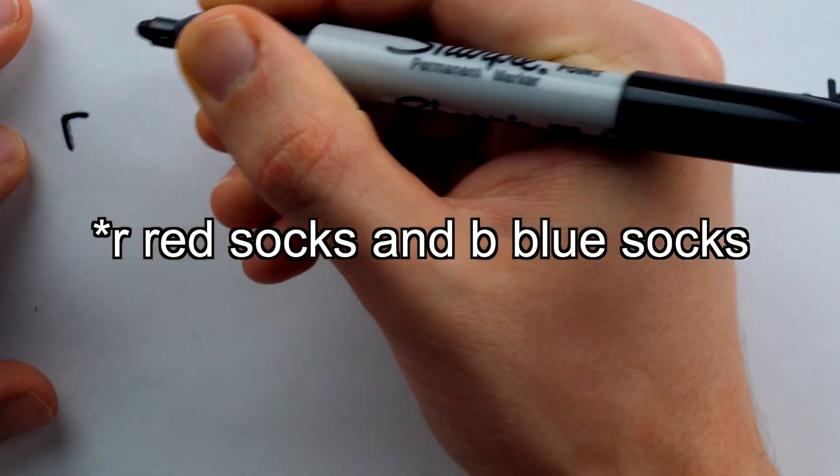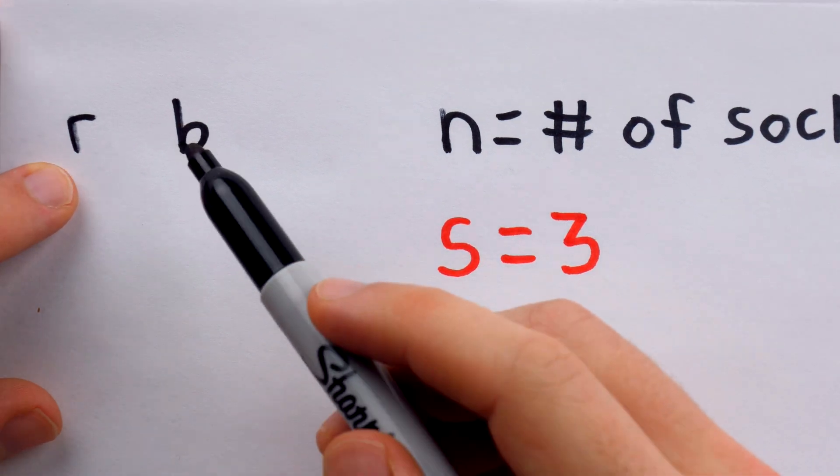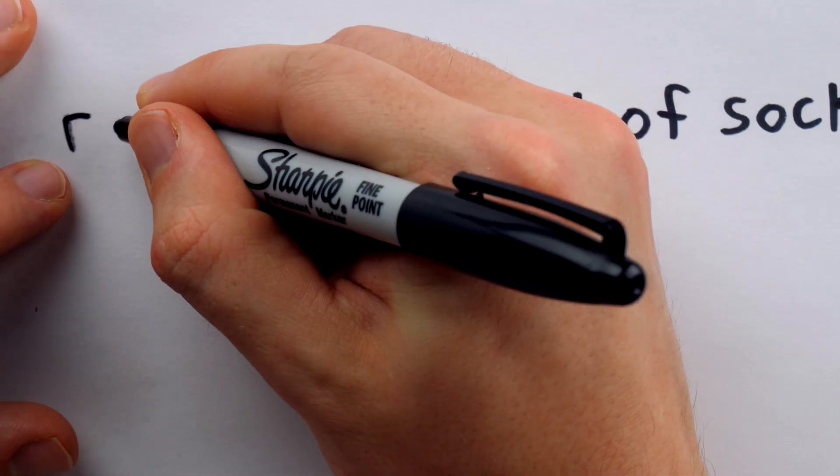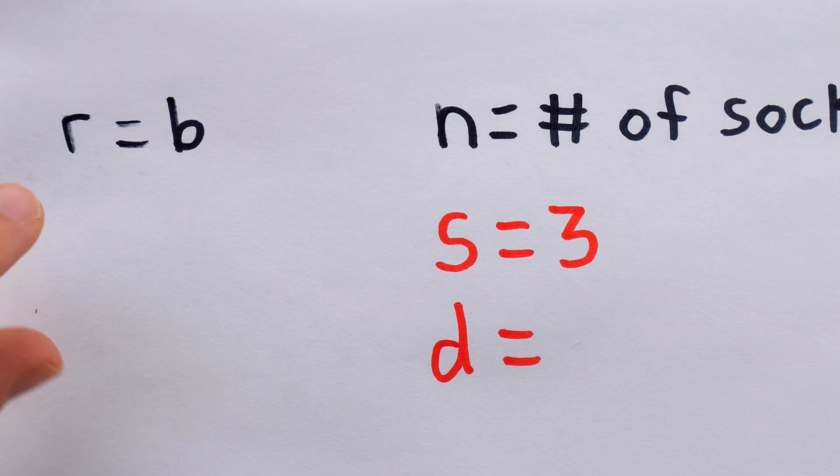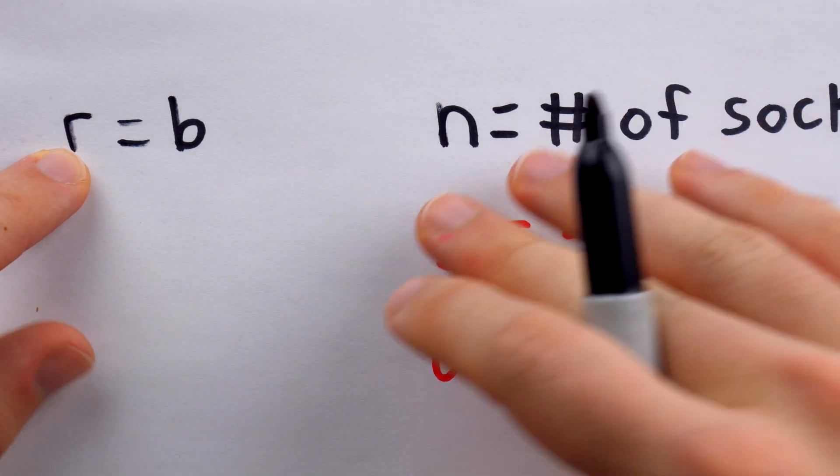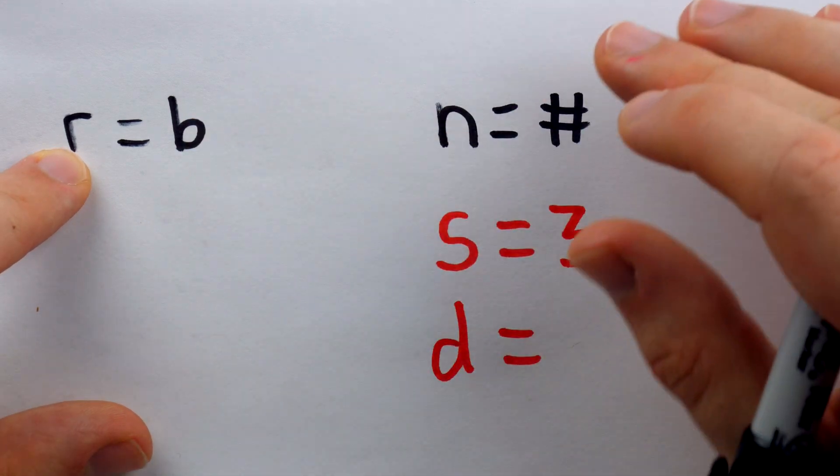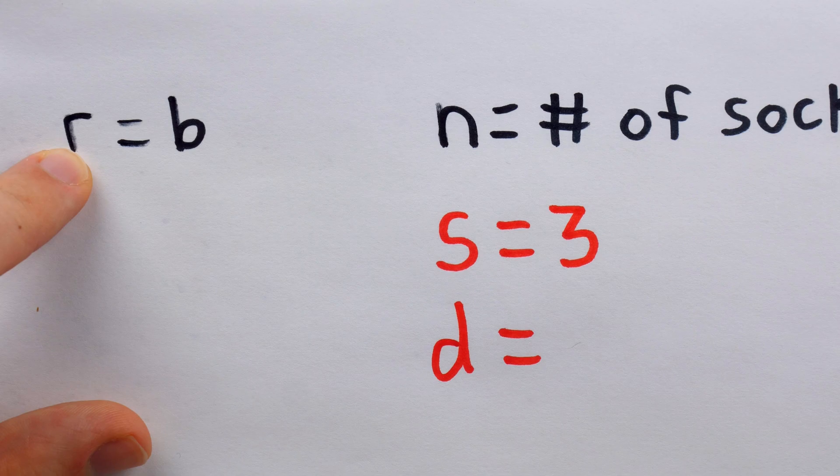Suppose we do have R red socks and B blue socks. Then, what is D in terms of R or B? Remember, we happen to know that R is equal to B. Well, certainly, if we take R socks from the drawer, it's possible they could all be red. So, we could take R socks and still not have a mixed pair. We could have happened to take all the red ones.